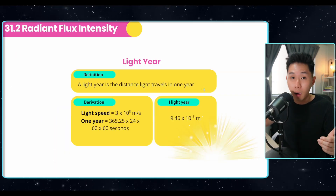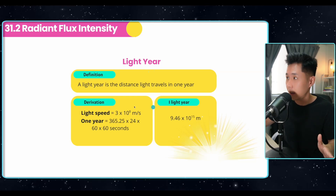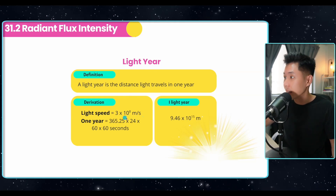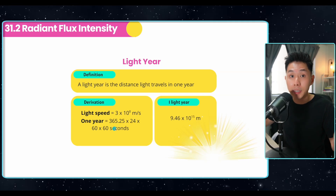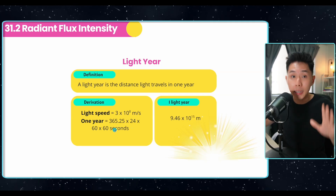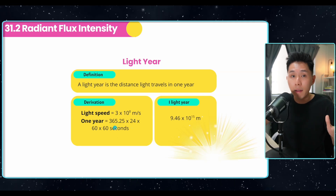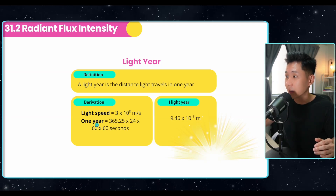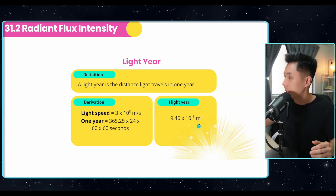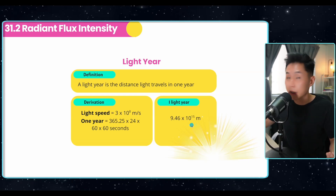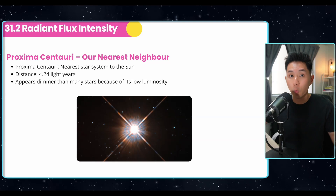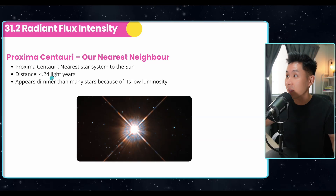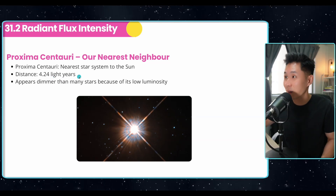Another term used very often is the light year. It's the distance that light travels in a year. You know the speed of light and the number of seconds in a year, so to calculate one light year, you multiply light speed by the number of seconds in a year. One of the nearest star systems to the sun, Proxima Centauri, is around 4.24 light years away from us.